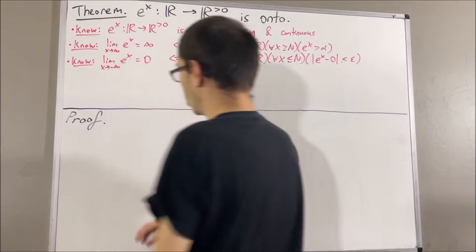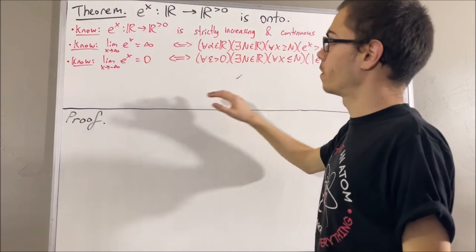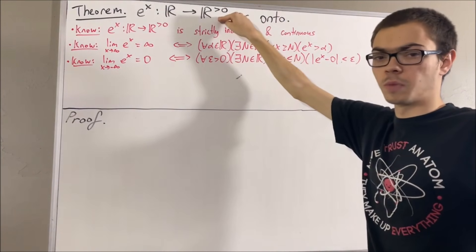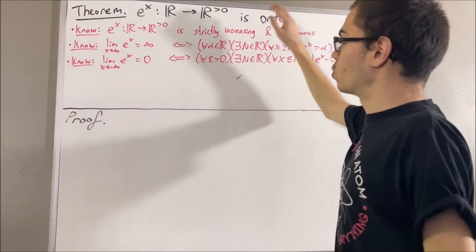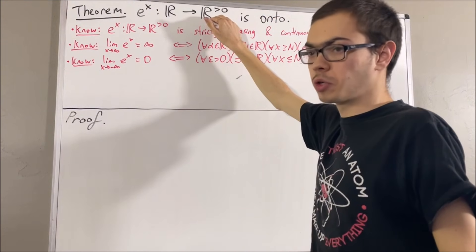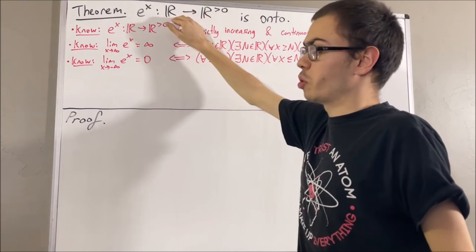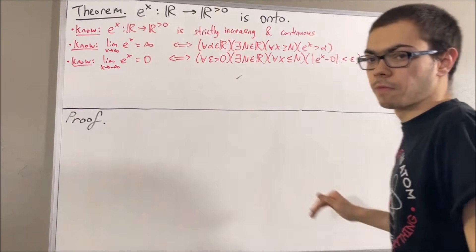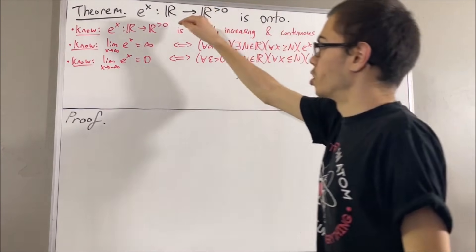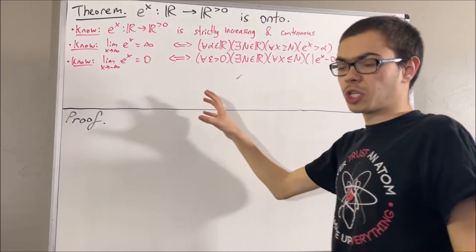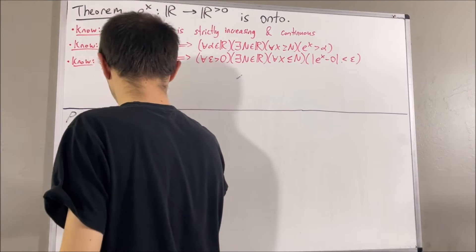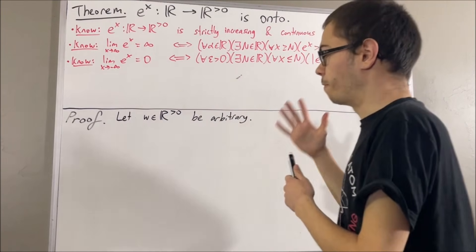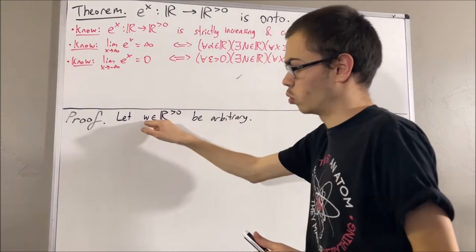Equipped with these properties, we are going to prove that the exponential function maps onto the positive real numbers. What that means is we want to prove: for every positive real number w, there exists a real number c such that e^c = w. So to prove that, let's start by giving ourselves an arbitrary positive real number w. The whole goal from here is to find a real number c such that e^c = w.